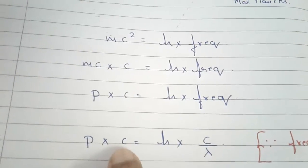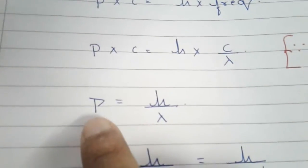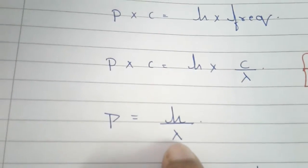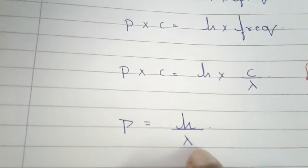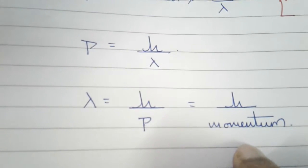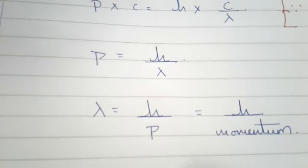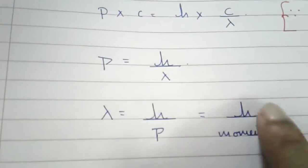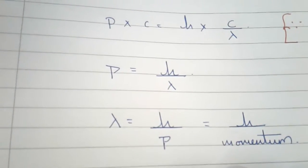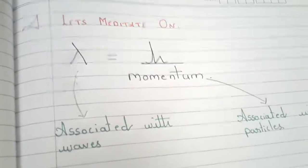The next step was to cancel the c on both sides. The new equation he got was momentum equals h divided by lambda. He then cross-multiplied, taking lambda on one side and momentum on the other. The resulting equation was: lambda, that is wavelength, equals h divided by momentum. Every equation has a story to tell, and he began to meditate on this simplified equation.